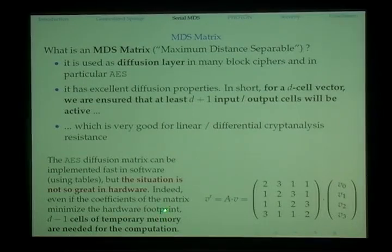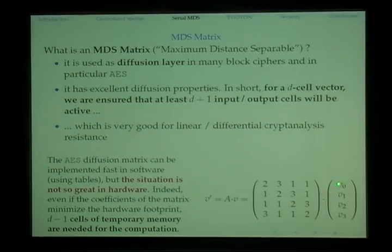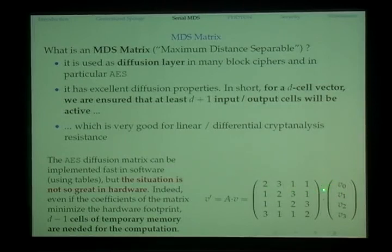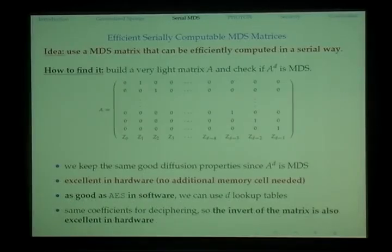The AES diffusion matrix can be implemented in software using table lookups, but the hardware situation is not so great. If we implement the row coefficients once and reuse them for other rows, we can do this in hardware — computing a row multiplied by a factor to update v0 — but when we want to update the second value we need the original v0. So in that case we actually need to store the previous values, and in hardware storing means extra memory requirements.